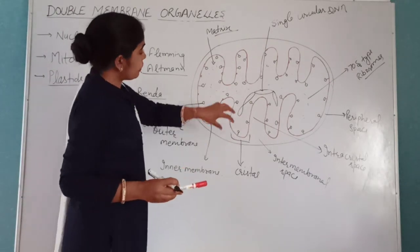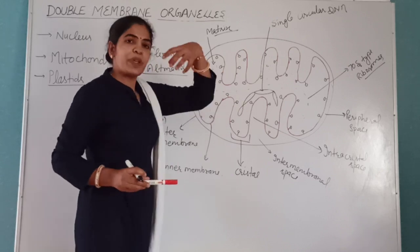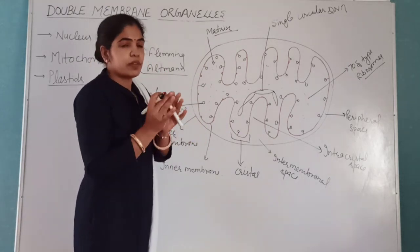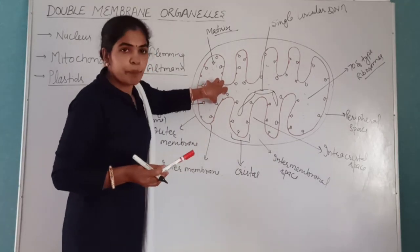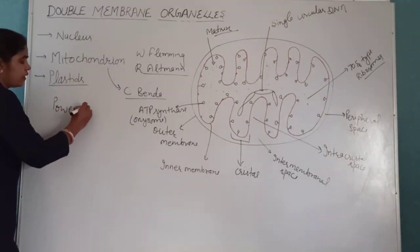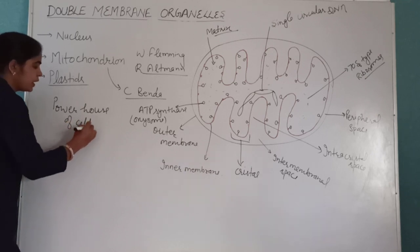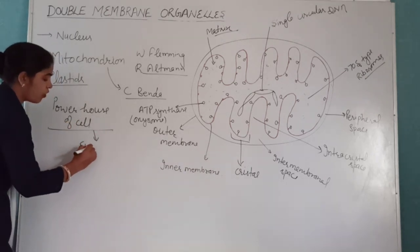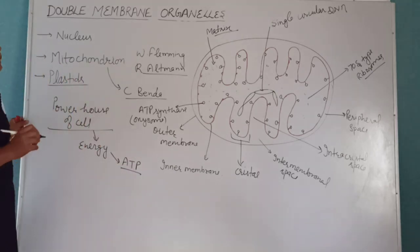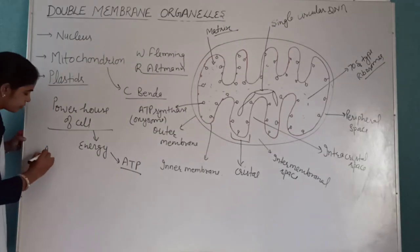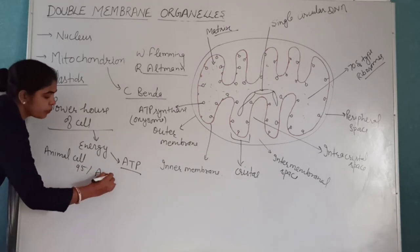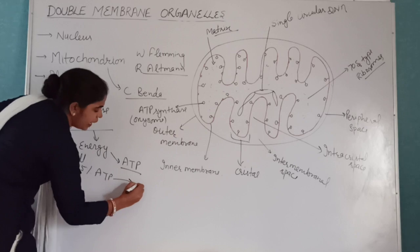ATP — adenosine triphosphate — is the energy currency of the cell, and it is produced here in the mitochondria. This is why mitochondria are called the powerhouse of the cell — because they produce energy in the form of ATP. In animal cells, 95% of ATP is produced by aerobic respiration, that is, inside the mitochondria.